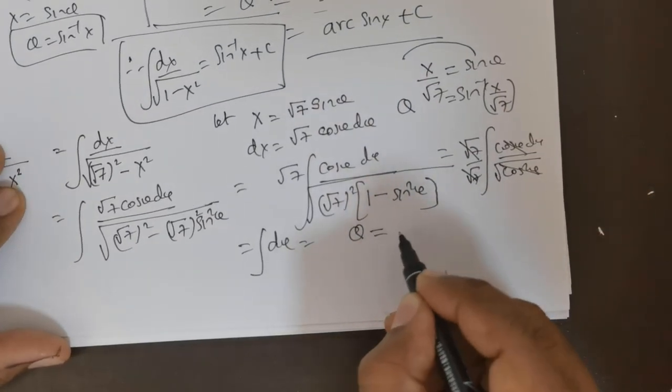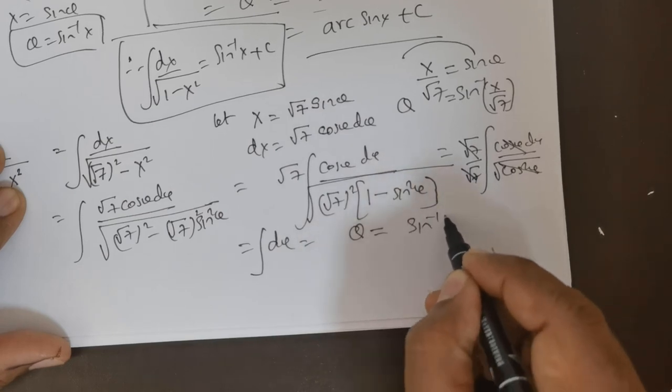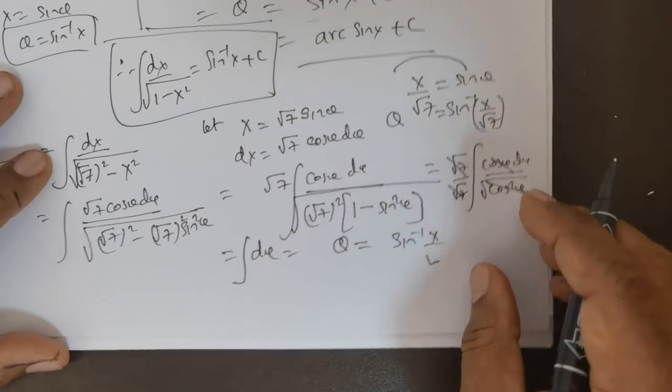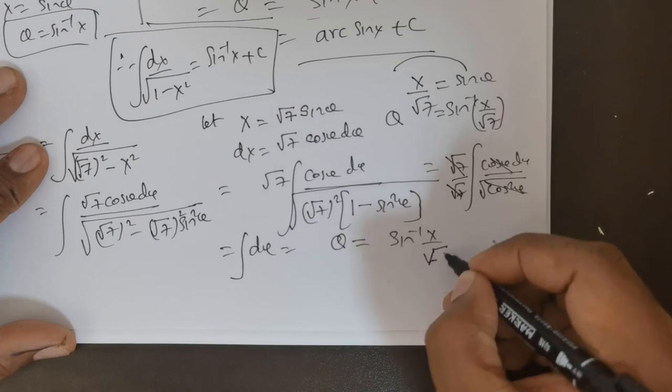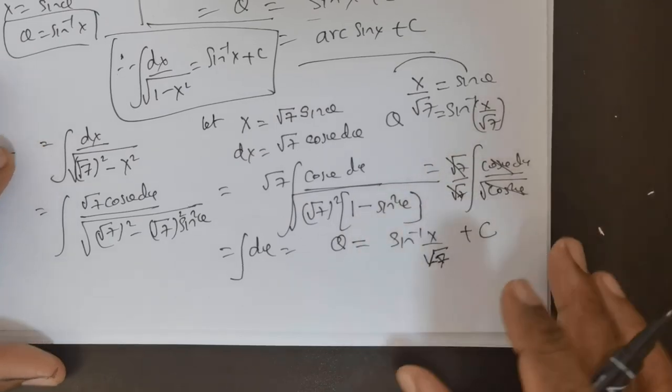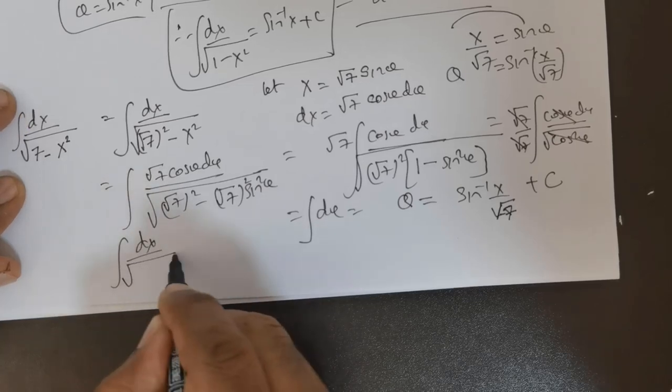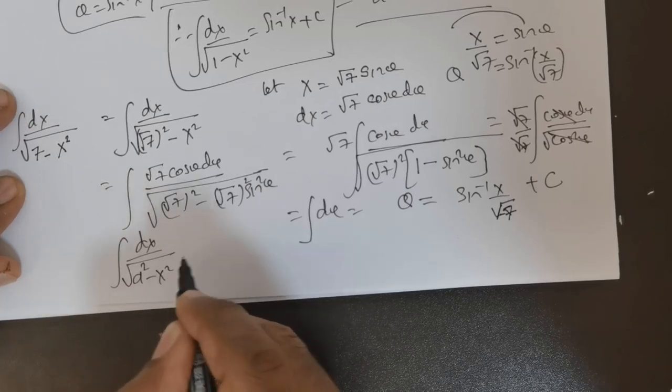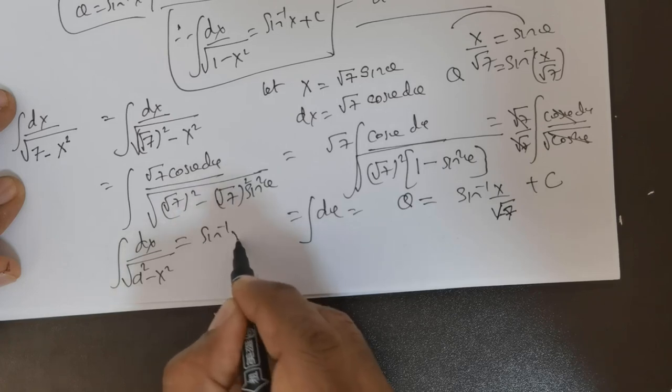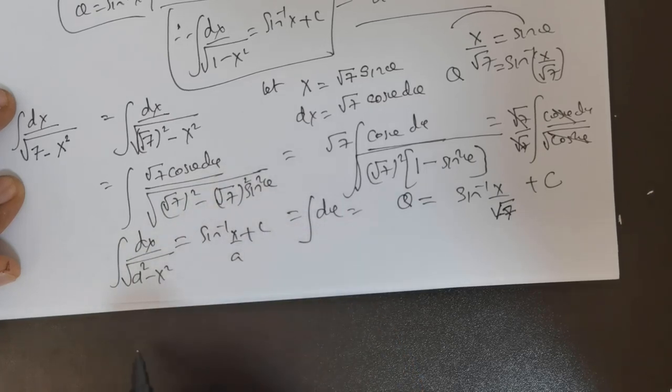So therefore, we can write this as sin inverse of x over root 7 plus an arbitrary constant C. So now we have got an important result.